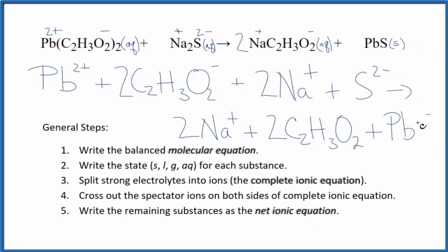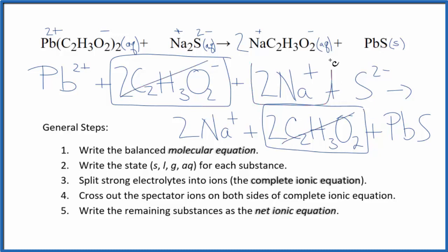So this is the complete or total ionic equation. Now we can cross out spectator ions. They're on both sides, they haven't changed, we're really not interested in them. I can see in the reactants here I have two of these acetate ions. I also have two of them here in the products. I can see I have two sodium ions and right here I have two sodium ions in the products.